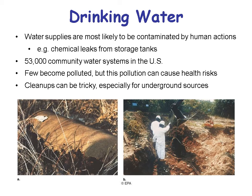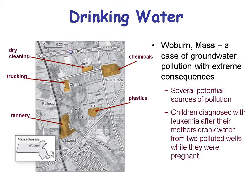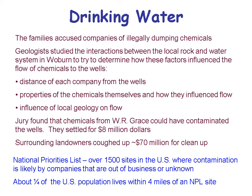We saw in the news that there was a spill into a river in West Virginia and the water got polluted — people couldn't drink it, and cleanup can be tricky. There's a map of an example from Woburn, Massachusetts, where there were several potential sources of pollution, and children were diagnosed after their mothers drank water from two polluted wells while pregnant. Old industrial sites are a real problem for clean drinking water. Families accused the companies of illegally dumping chemicals, and geologists came in to study the interactions between local rock and water systems to try to determine the source of those pollutants.